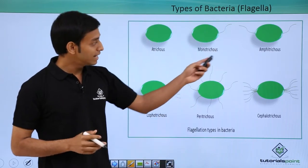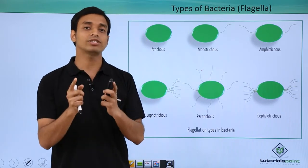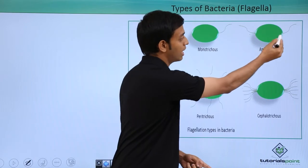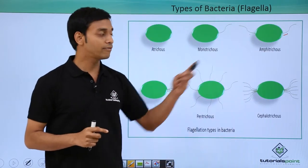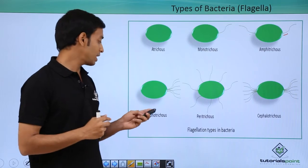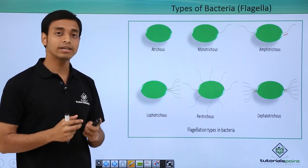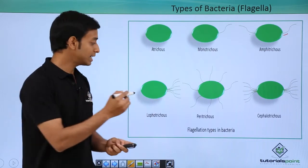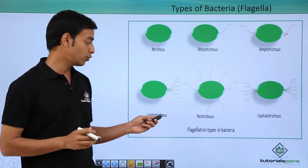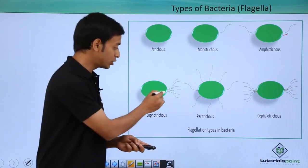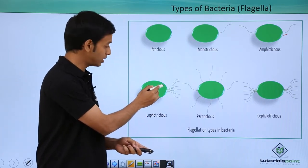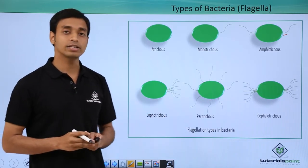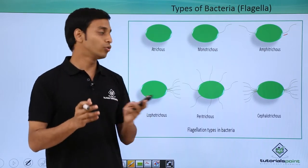Monotrichous means a single flagellum is present, as you can see. Amphitrichous means single flagella are present on opposite ends — one flagellum here and another on the other end. Lophotrichous means a tuft or group of flagella is present only at a single side; the other surfaces have no flagella.